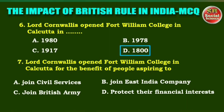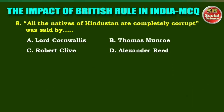Next one: Lord Cornwallis opened Fort William College in Calcutta for the benefit of people aspiring to — options are: (a) join civil services, (b) join the East India Company, (c) join the British army, (d) protect their financial interest. The right answer is option A: to join civil services. Next question: 'All the natives of Hindustan are completely corrupt' was said by — options are: Lord Cornwallis, Thomas Monroe, Robert Clive, Alexander Reed. The right answer is option A: Lord Cornwallis.